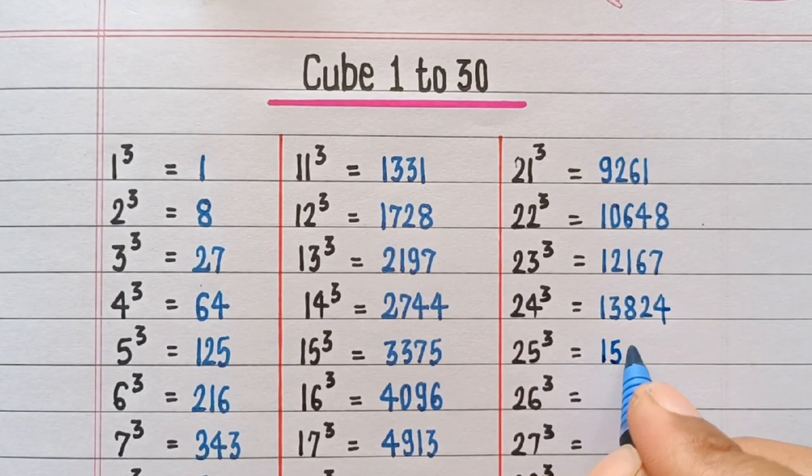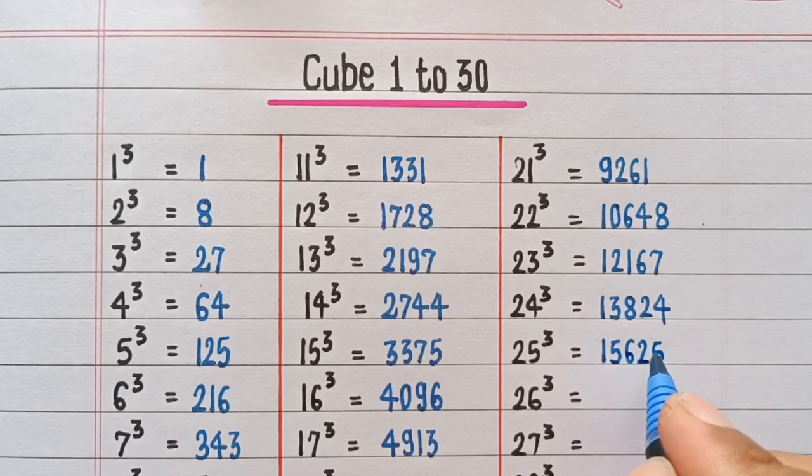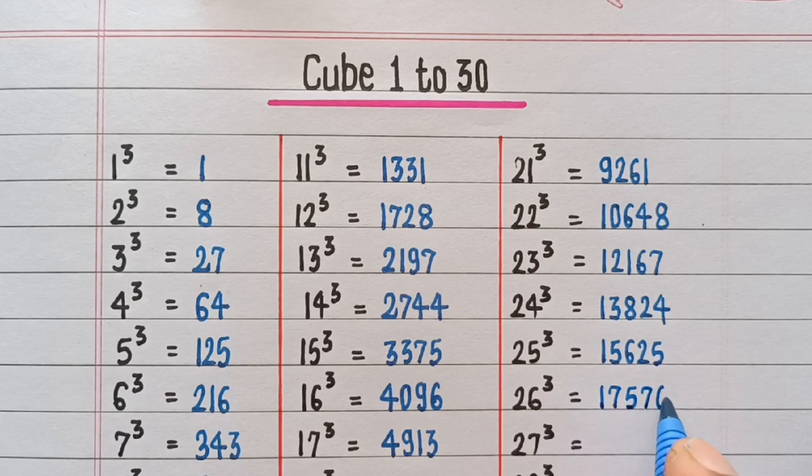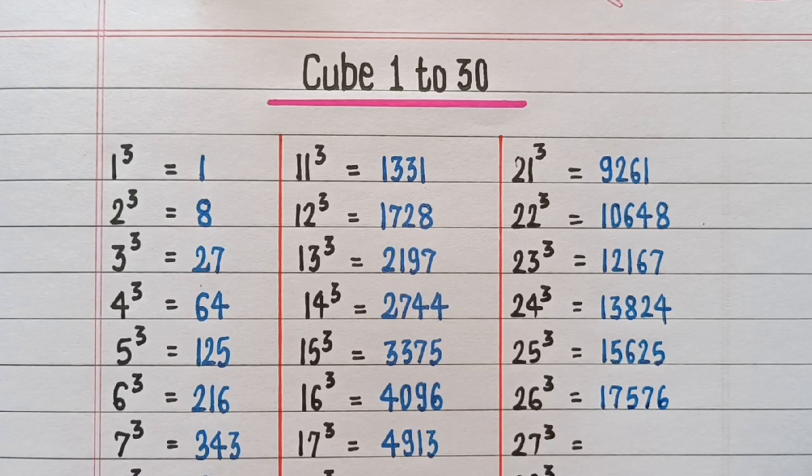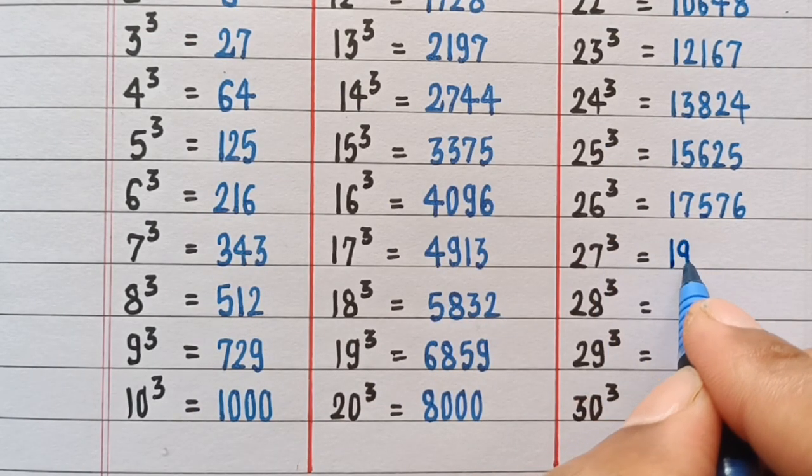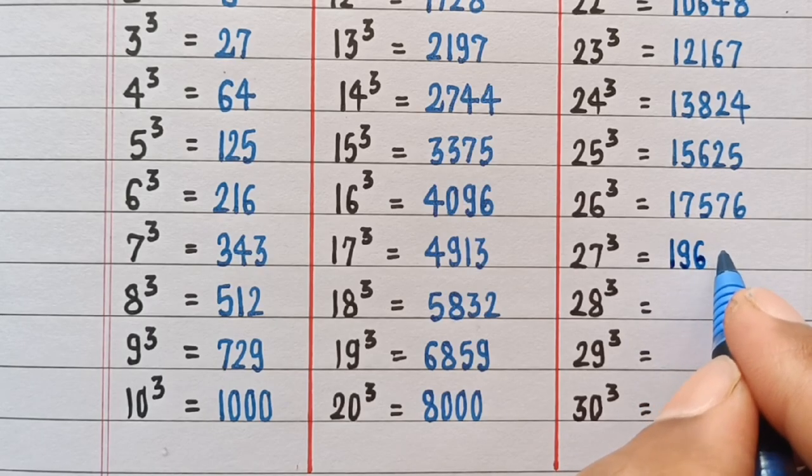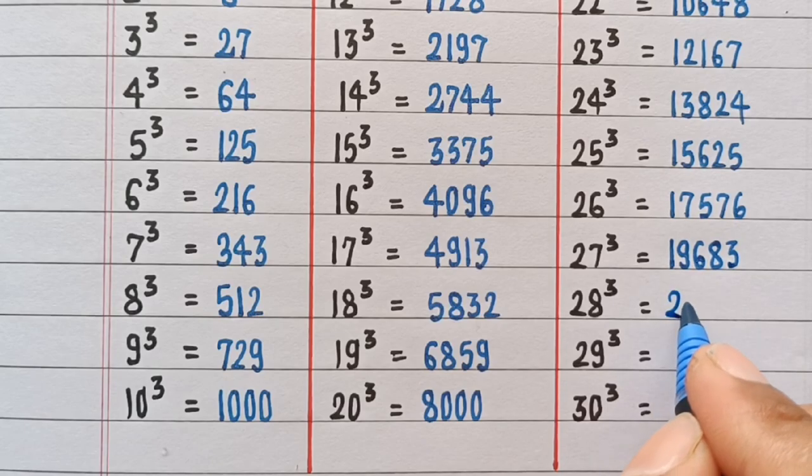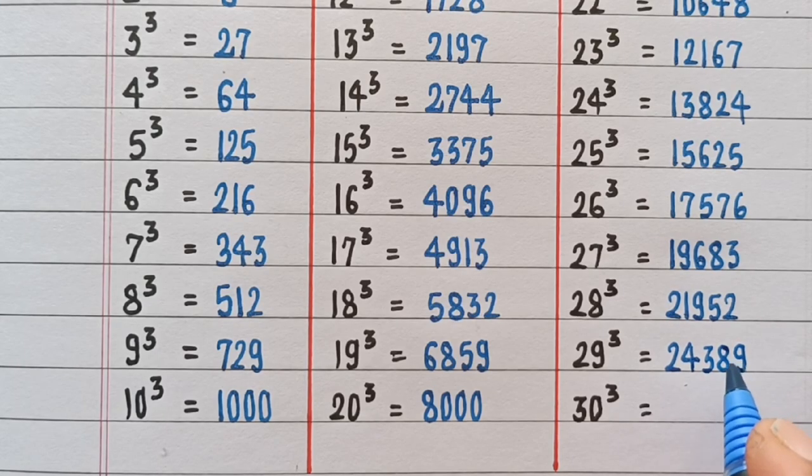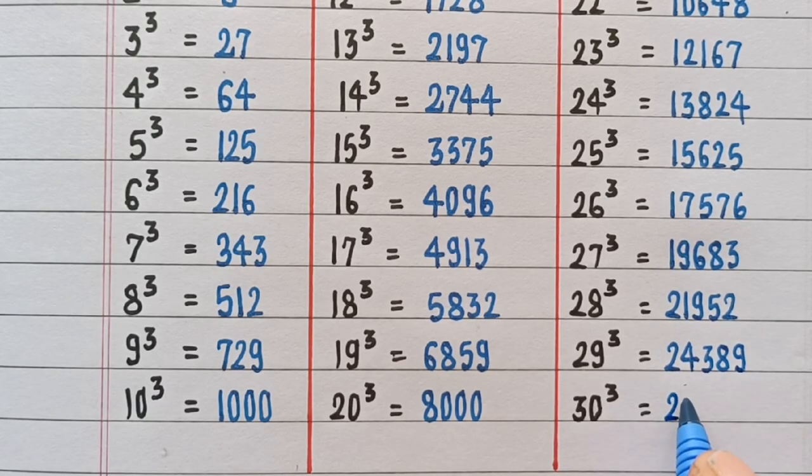Cube of 25 is 15625. Cube of 26 is 17576. Cube of 27 is 19683. Cube of 28 is 21952. Cube of 29 is 24389. Cube of 30 is 27000.